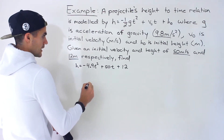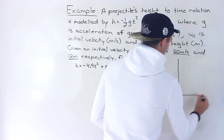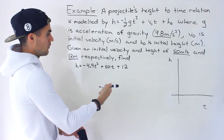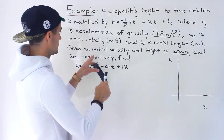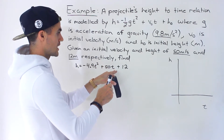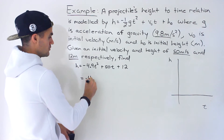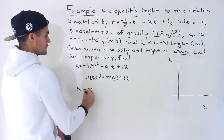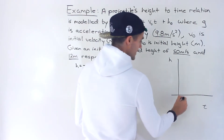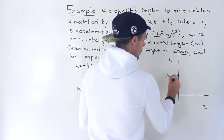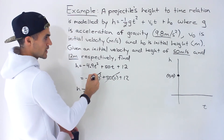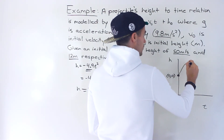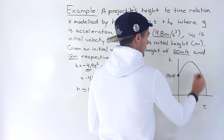Let's make a rough diagram modeling h with respect to t. We're given the initial height of 12 meters, and we can verify this by plugging in 0 for t — we'd be left with h equals 12. At t equals 0 we have that initial height. This quadratic opens downward because of the negative a value, so the projectile gets launched up, reaches a maximum point, and then comes back down.